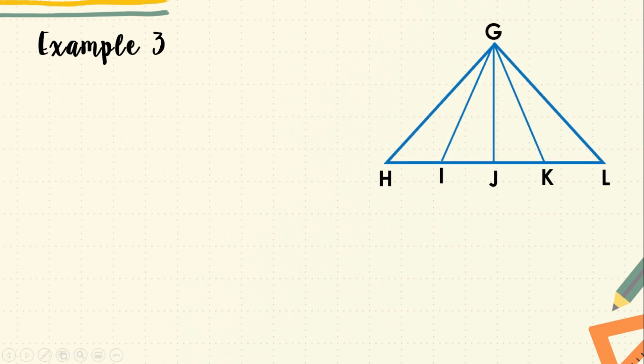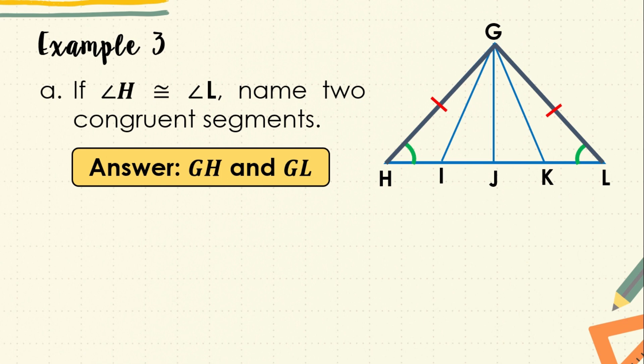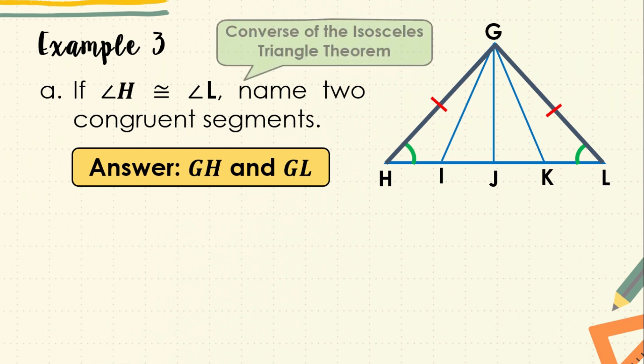Let us now apply the isosceles triangle theorem and its converse. For this example, we will use the given triangle. Letter A: if angle H is congruent to angle L, name two congruent segments. The answer is segment GH and segment GL, because of the converse of the isosceles triangle theorem — if two angles of a triangle are congruent, then the sides opposite these angles are also congruent.